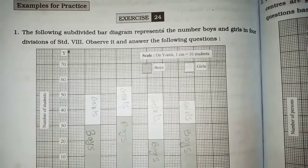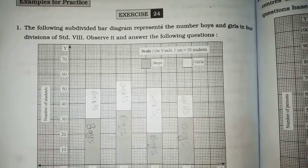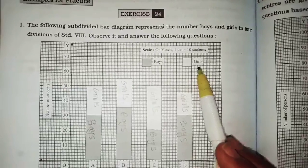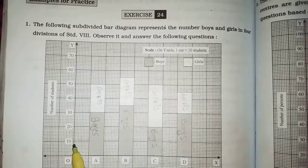Scale on y-axis 1 cm 10 student. Shaded part boys and unshaded part girls. Number of students 1 cm 10 student.